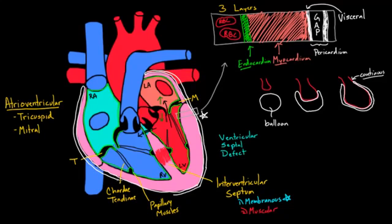So let me label that as well. So that's this guy. That would be the parietal pericardium. So now you can actually see the layers of the heart, the endocardium, myocardium, and pericardium.